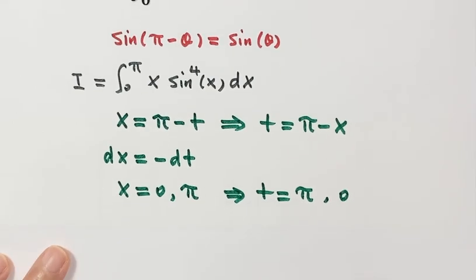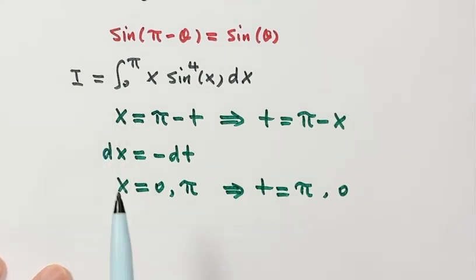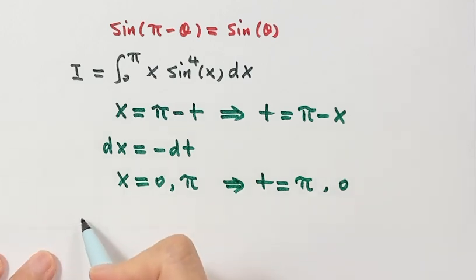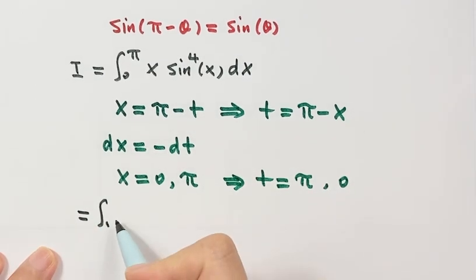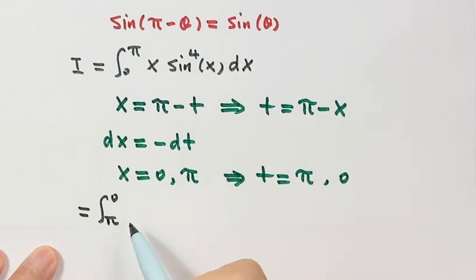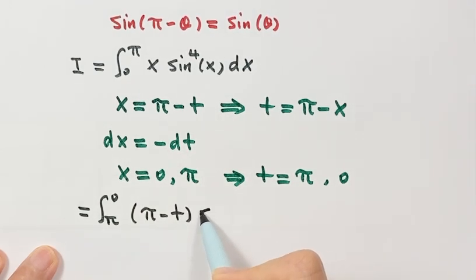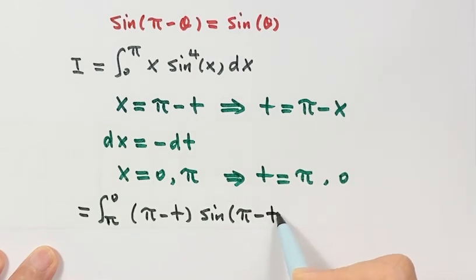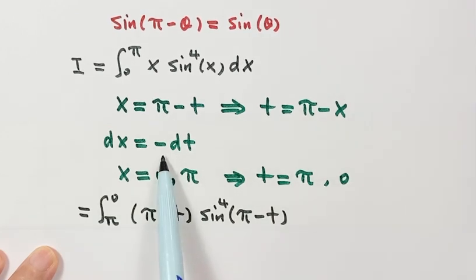Okay, so now let's do the substitution. Continuing from the equal sign, the lower limit becomes π and the upper limit is 0. So x is replaced, then sine of x to the 4th power, and dx becomes negative dt.